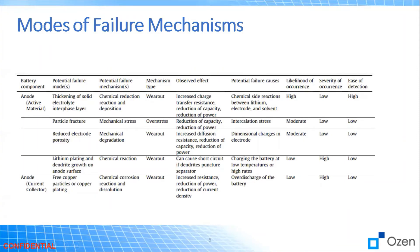Failure modes we might expect here include chemical side reactions between the lithium electrode and solvent. Here is the likelihood of occurrence, severity of the occurrence, and ease of detection. There are different modes related to the anode, such as particle fracture, reduced electrode porosity, lithium plating, and dendrite growth on the anode surface. Most of these fall under wear out, but some are also over-stress.